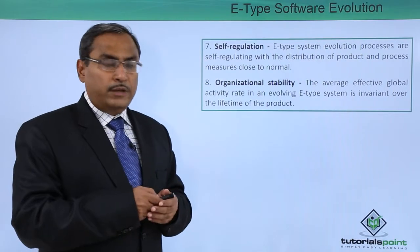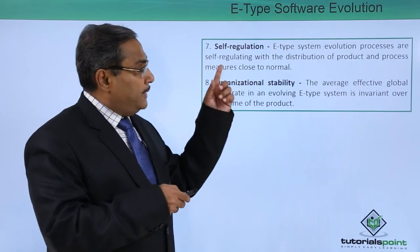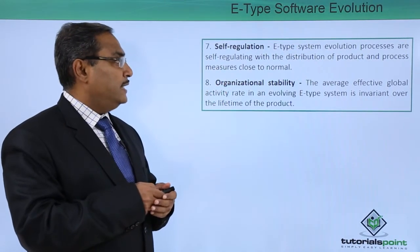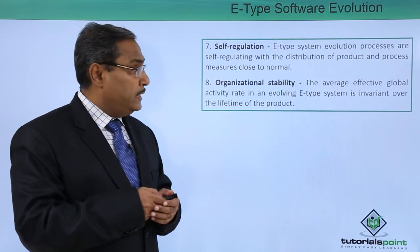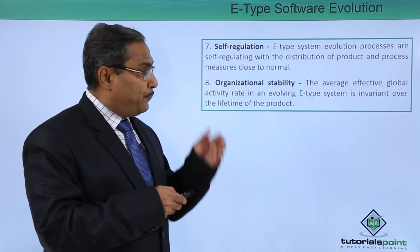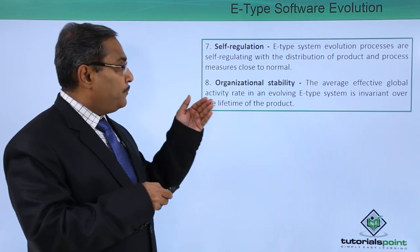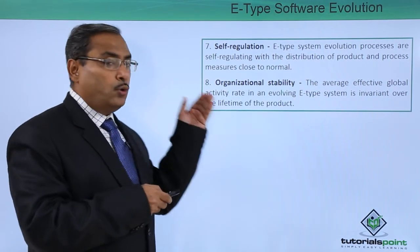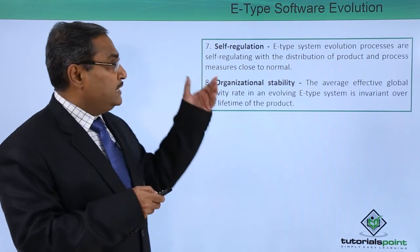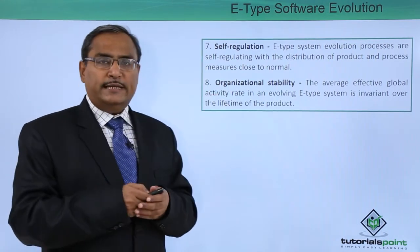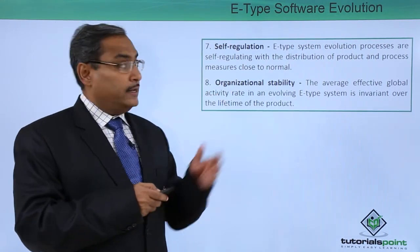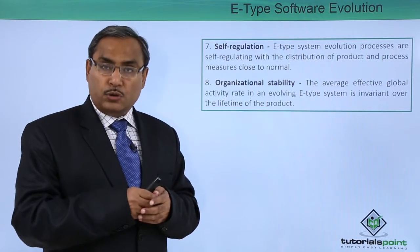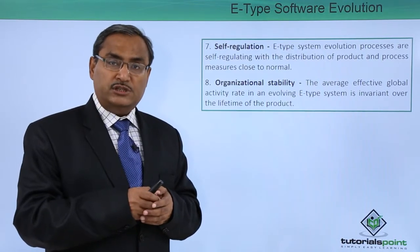The seventh law is self-regulation. E-type system evolution processes are self-regulating, with the distribution of product and process measures close to normal. This means that changes in this aspect follow the normal distribution.